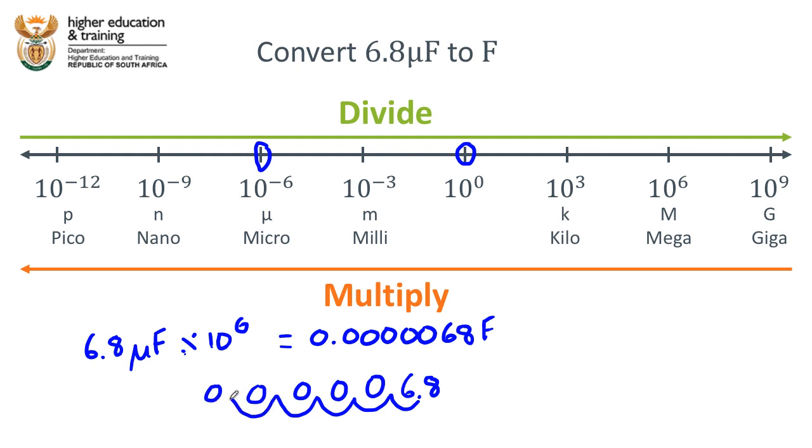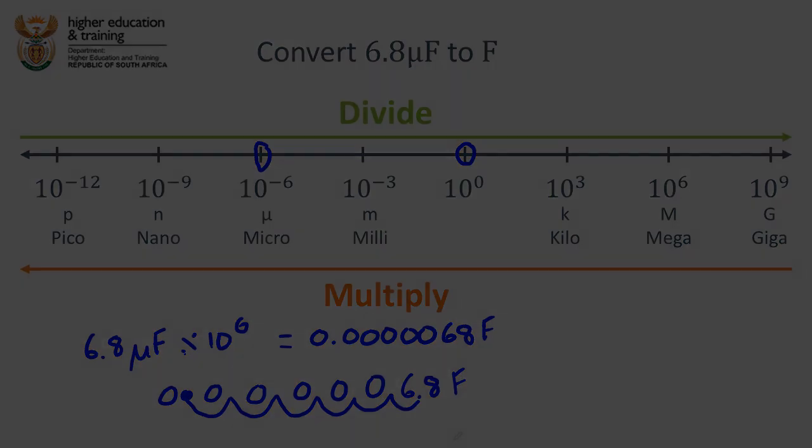5, another zero. And the last, another zero. The decimal point would land up over there. How many zeros do we have? 1, 2, 3, 4, 5. The same as the answer we get on the calculator. So this would be 0.000068. Again, the units would be farads.